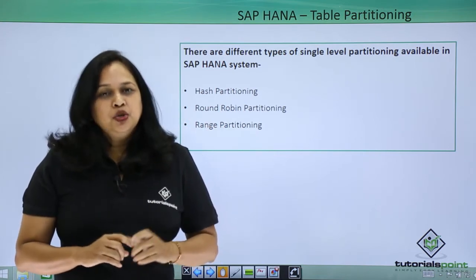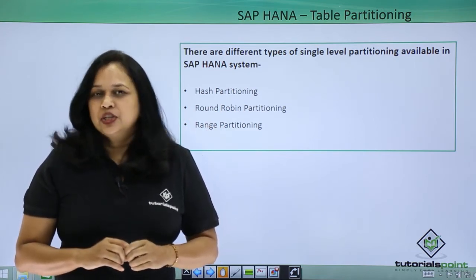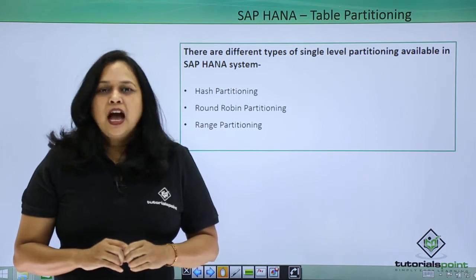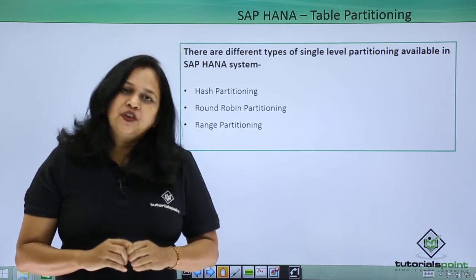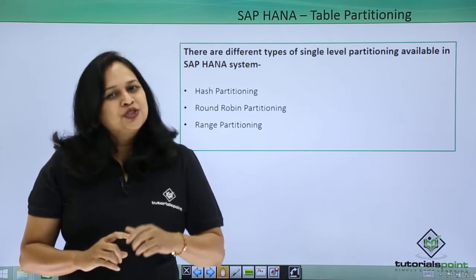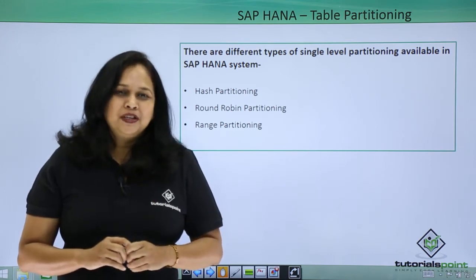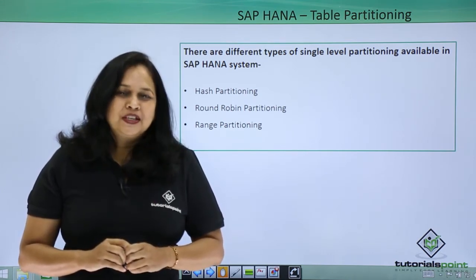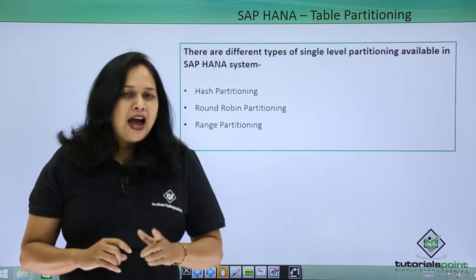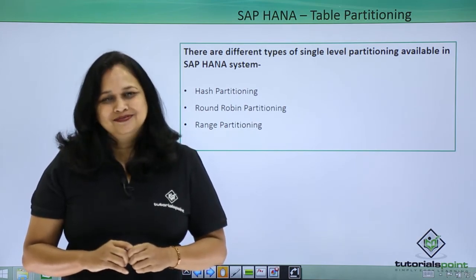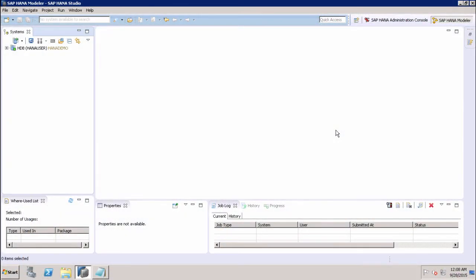Partitioning is done using SQL queries in the SQL editor, and you have to use different syntax for different partitioning types. Let us go to the SAP HANA environment and see how a table is partitioned using hash, round robin, and range partitioning methods in SAP HANA Studio.